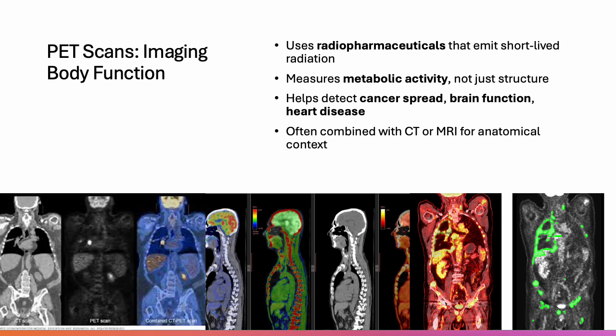PET scans let us see function, not just structure. By injecting a small radioactive tracer, we can see which parts of the brain are active or where a tumor is metabolizing glucose. This is especially useful for cancer care and neurology.